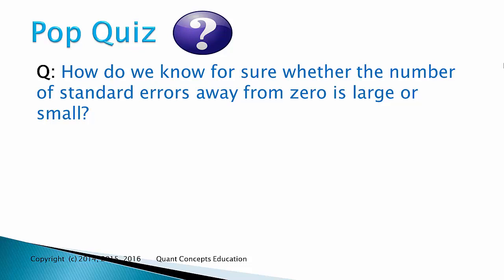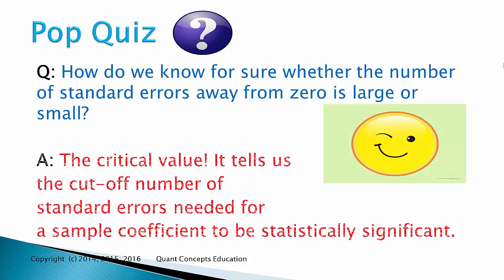That is, how many standard errors until we conclude that the sample beta hat is too close to 0? We use the critical value. It tells us the number of standard errors needed for a sample coefficient to be statistically significant. That is, for it to be statistically different from 0. We've previously covered the critical value in my hypothesis testing lectures. Be sure to check it out if you're unsure about critical values.